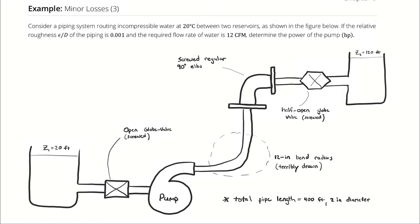Consider a piping system routing incompressible water at 20 degrees Celsius between two reservoirs as shown in the figure. If the relative roughness of the piping is 0.001 and the required flow rate of water is 12 cubic feet per minute, determine the power of the pump required.